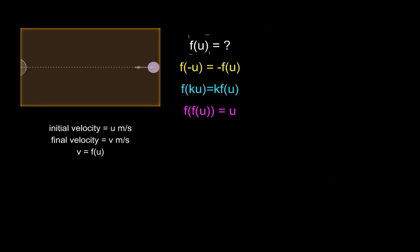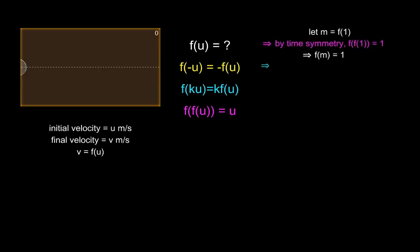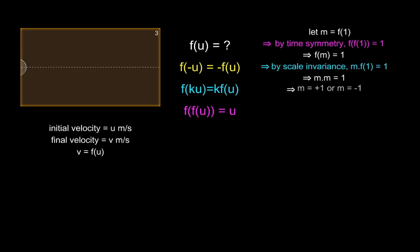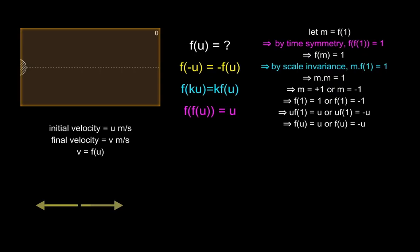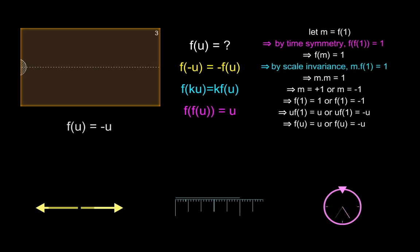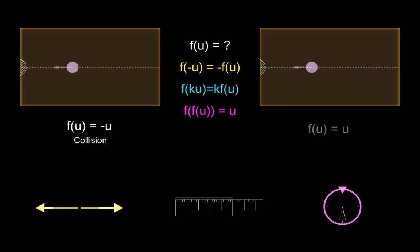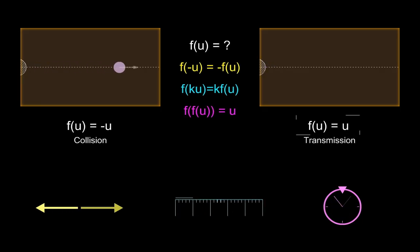We are now ready to resolve f. By time symmetry, f of f of 1 equals 1. Applying scale invariance, f of 1 times f of 1 equals 1, so f of 1 equals 1 or f of 1 equals minus 1. That means either f of u equals negative u or f of u equals u. Both are valid solutions under isotropy, time reversal symmetry, and scale invariance. In the first case, the particle collides with the wall and returns with equal and opposite velocity. In the second case, the particle transmits through the wall without interacting.